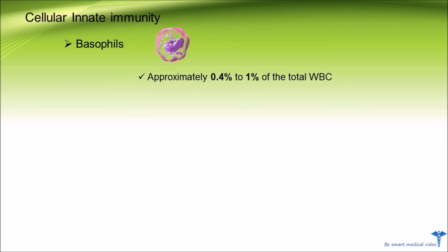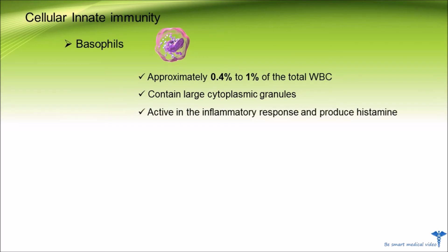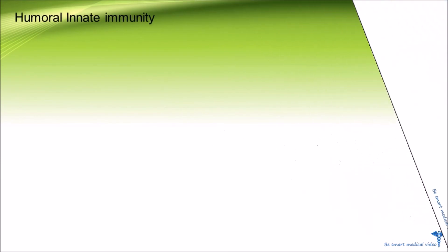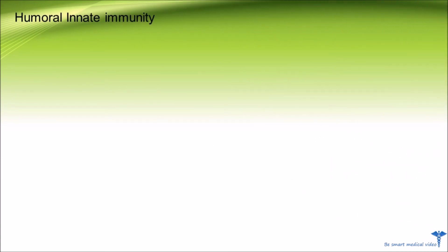Fifth, basophils represent approximately 0.4 to one percent of the total white blood cell count. They are a type of granular white blood cell containing large cytoplasmic granules. Basophils are active in the inflammatory response and produce histamine during inflammatory reactions.